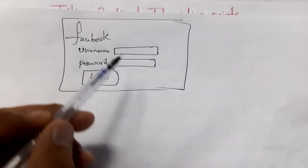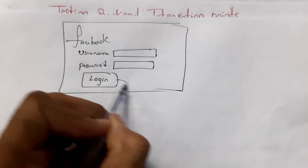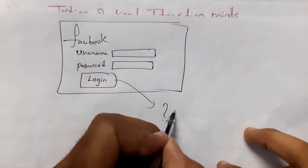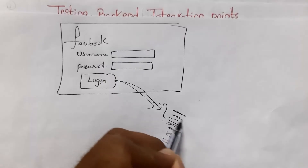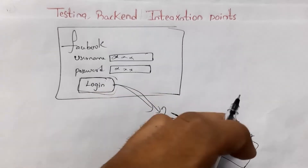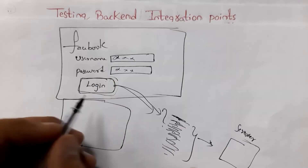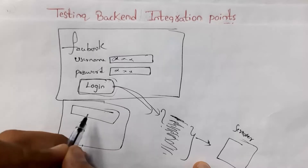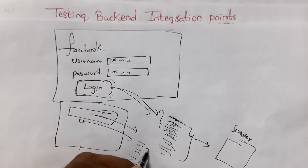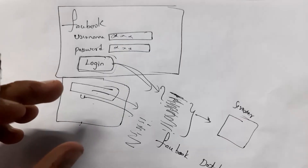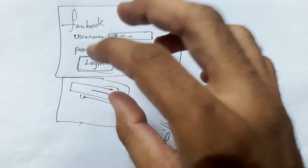Whenever you enter your username and password and click the login button, you automatically log into your Facebook account. This is because of the backend — I write code in the backend, and whenever you click the login button, that backend code automatically connects to the Facebook server and verifies whether your username and password are correct. Similarly, if you want to upload an image, clicking the upload button triggers backend code that stores the image in the Facebook database.